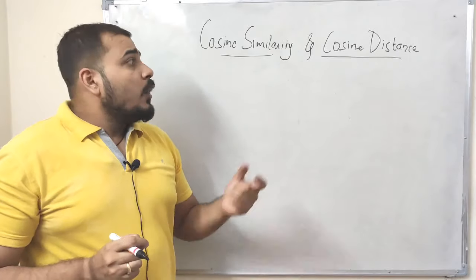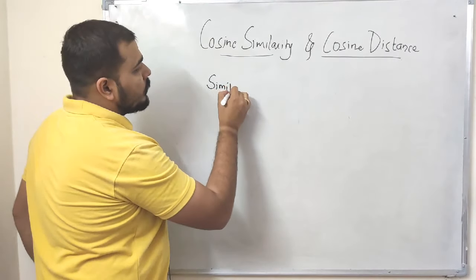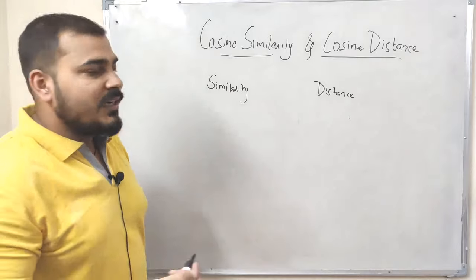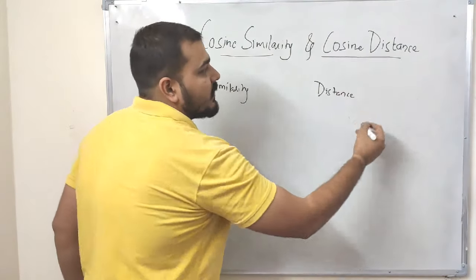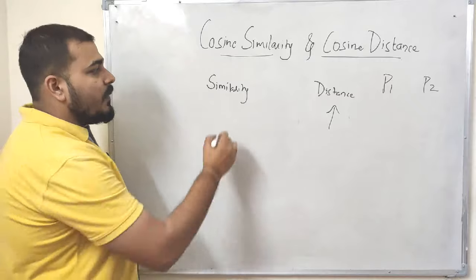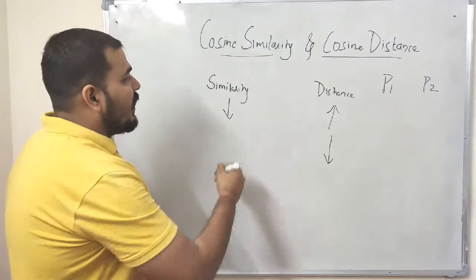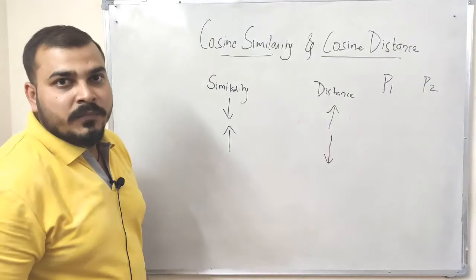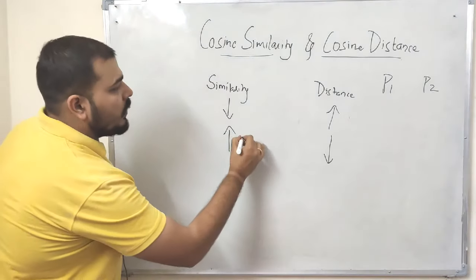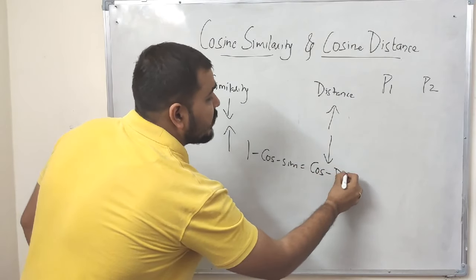I'll give you a very good example of why cosine similarity and cosine distance are used. First, let's take the terms similarity and distance. Cosine similarity and cosine distance basically say that as the distance between two points P1 and P2 increases, the similarity between those points decreases, and vice versa.